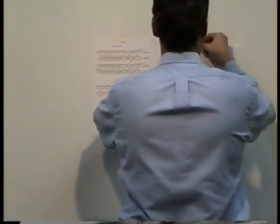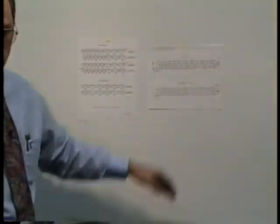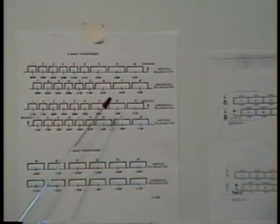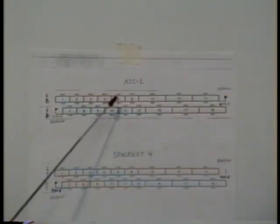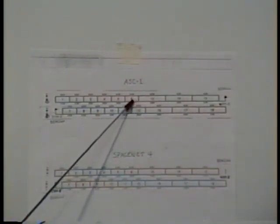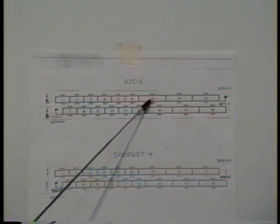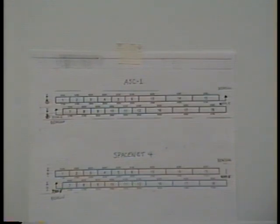This is for ASC-1. These are your transponders. These narrow ones here are 40 megahertz wide, and these bigger ones are 80 megahertz wide. Your newer satellites have 80 megahertz transponders on them now, whereas the old Westar system, I think they only had the 40 meg.